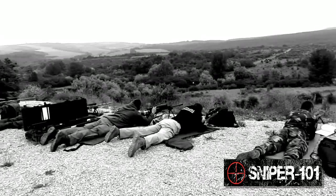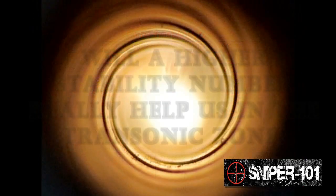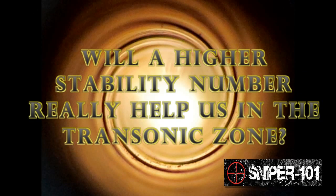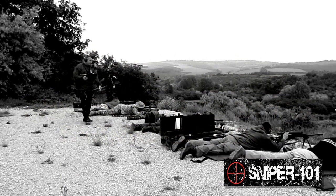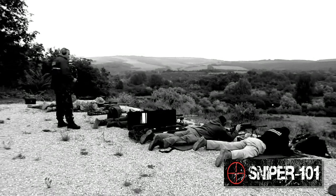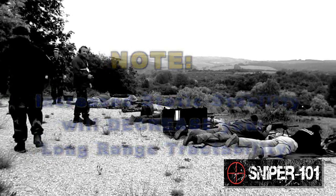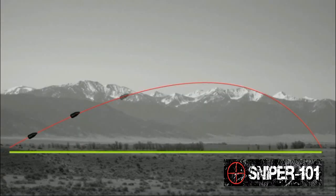One idea is to increase static stability by increasing rifle twist — the theory being that when the bullet enters the transonic zone, any turbulence introduced will be dampened out by the higher static stability. This is why many shooters focus on their calculated stability number and prefer a higher value. However, there are other important factors to consider, particularly tractability — the ability of the projectile to keep its nose pointed on with its direction of flight throughout the trajectory.